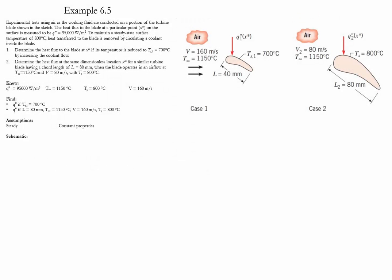Example 6.5. In this example, we use an experimental test using air as a working fluid around a portion of a turbine blade. The heat flux of the blade at a particular position X* is given to be 95,000 watts per meter squared. To maintain a steady temperature of 800 degrees Celsius, there is a coolant inside of the blade.